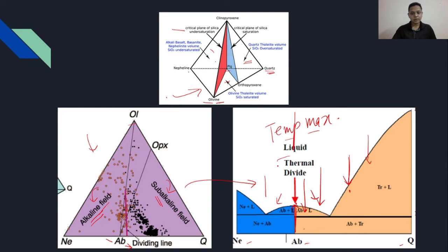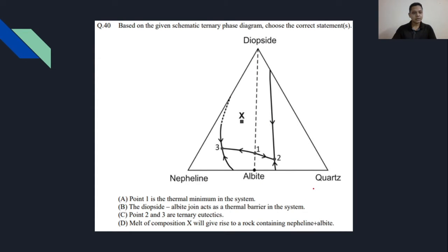Now let us solve this question and see how we can apply our knowledge. This was asked in IIT JAM 2019 paper. This is an MSQ question, so more than one might be correct. We have given this nepheline-quartz-diopside ternary phase diagram and we have been asked the correctness of these four statements. We will try to look at each statement and answer this question.